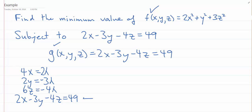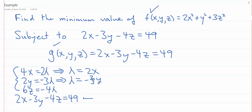Taking partial with respect to X: 4X equals lambda times 2, giving 2 lambda. Now the partial with respect to Y: 2Y equals negative 3 lambda. Next, 6Z equals negative 4 lambda. And of course we keep the constraint: 2X minus 3Y minus 4Z equals 49. What we're trying to do is use these equations to eliminate variables and find values.